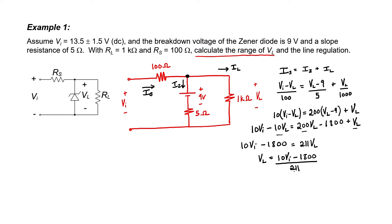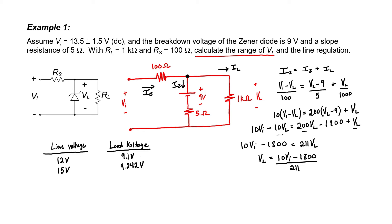Let's make a little chart that relates the line voltage to the load voltage, looking at the two endpoints. The minimum line voltage is 12 volts and the maximum line voltage is 15 volts. If we plug in 12 and 15 for V sub I in my equation, I can find the corresponding load voltages. The voltage regulator works: I had a 3-volt variation in my line, but wound up with only a 0.142-volt variation at my load. For line regulation, we have delta VL over delta VI, expressed as a percent. When we plug in the values, the line regulation is 4.7%.